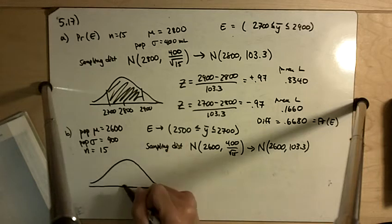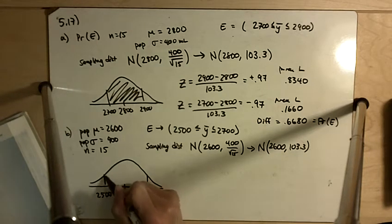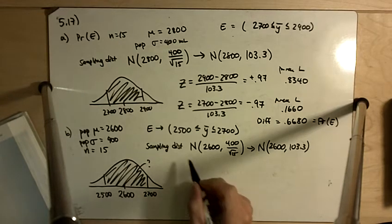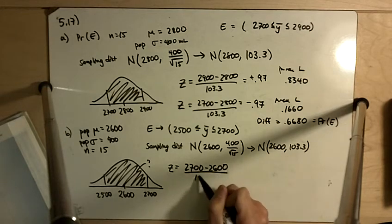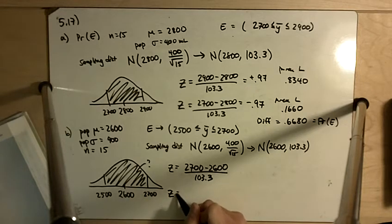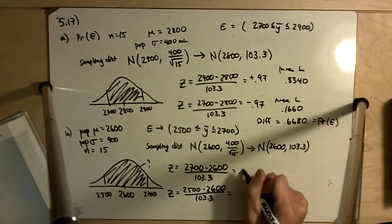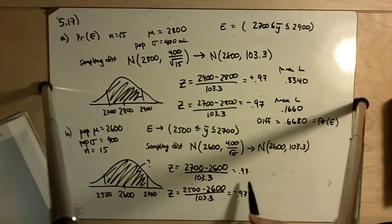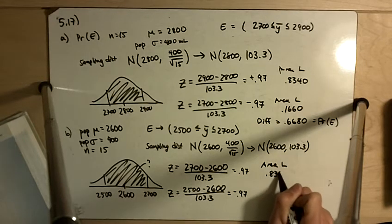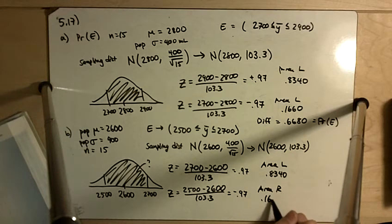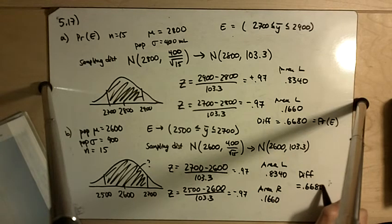The diagram looks very similar: centered at 2600, going up to 2700 and down to 2500. Z on the upper side is 2700 minus 2600 divided by 103.3. We get the same numbers as before — positive 0.97 and negative 0.97. The area to the left is 0.8340 and the difference is 0.6680, so the probability of E is again 0.6680.